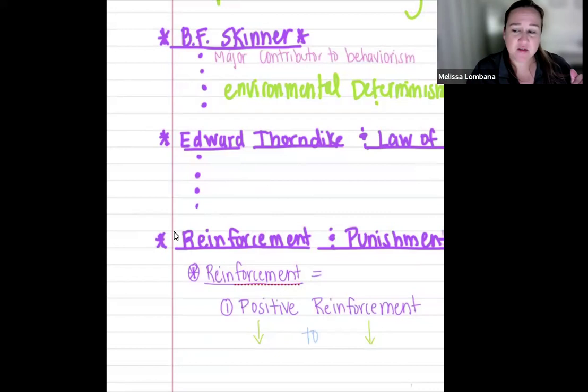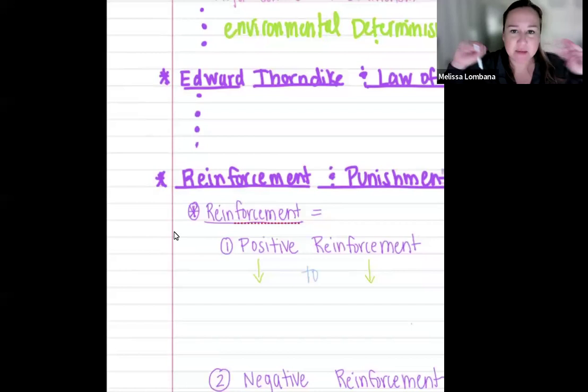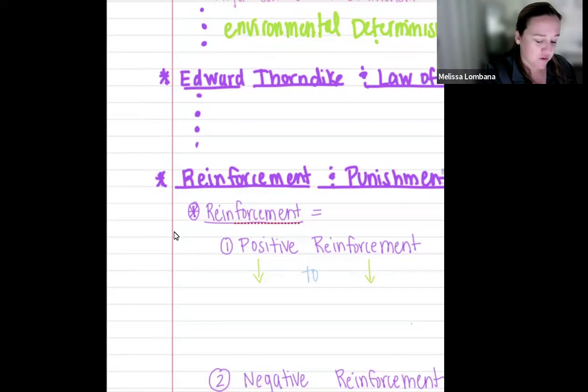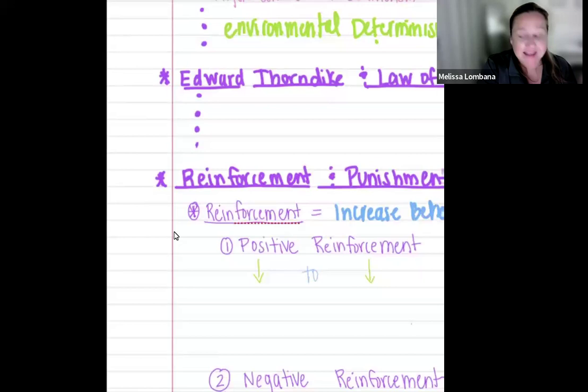Those are the two main guys when it comes to operant conditioning. The next section is reinforcement and punishment. I want you to eliminate the idea that reinforcement is good and punishment is bad — it has nothing to do with that. We're going to change our vocabulary around what these two words mean. In this class, whenever you see the word reinforcement, I want you to think: increase behavior. It's basically anything that is going to increase the behavior.